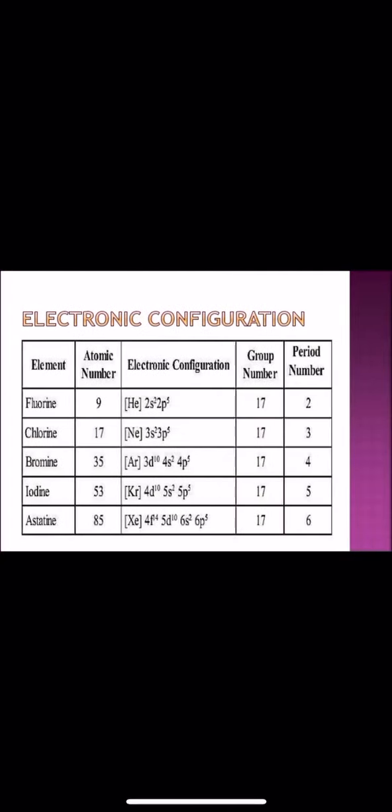The general electronic configuration of fluorine, chlorine, bromine, iodine and astatine is shown here. And you see here, they have the 7 valence electrons.